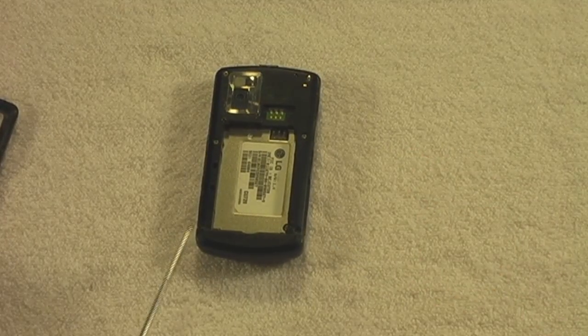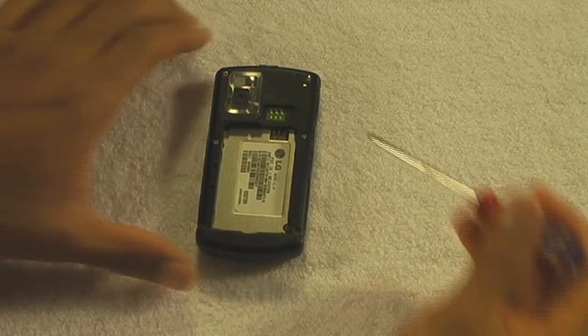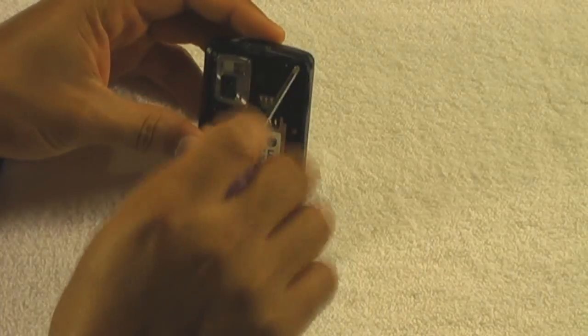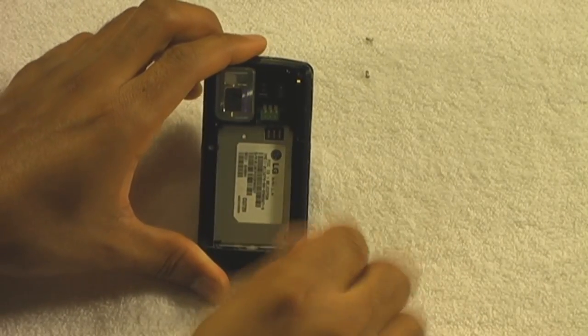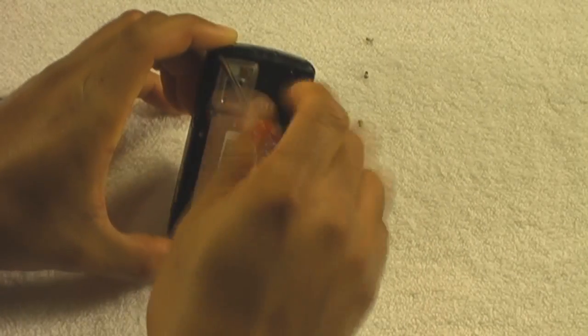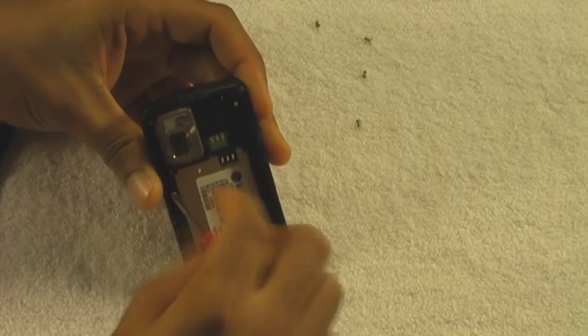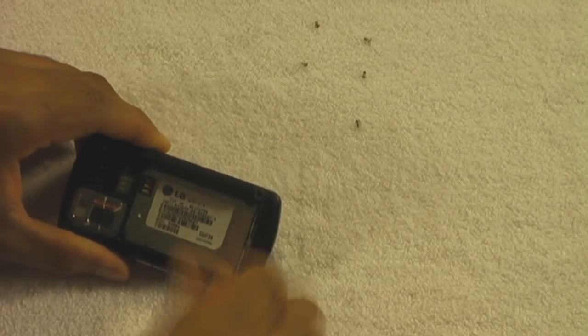If you can, go ahead and remove these six screws from the back of the phone. Just like this. Now notice that I'm putting them in the order that they're coming out of the phone. This isn't necessary, but it helps you sleep better at night knowing that you put every screw in exactly where it came from.